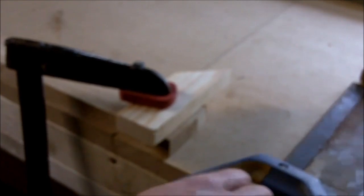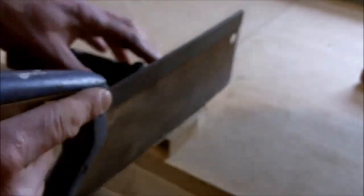To help me get an accurate cut, I'm going to clamp a piece of wood along the line with a G clamp and use it as a guide for my saw. I'm going to hold my saw with my first finger pointing along the spine. This helps me keep my saw straight and my cut accurate.